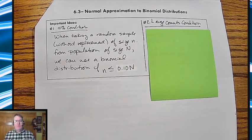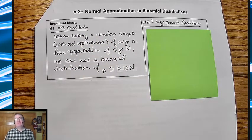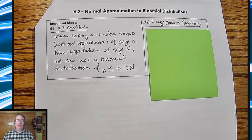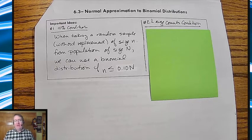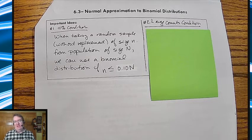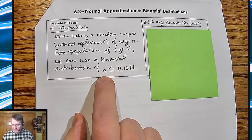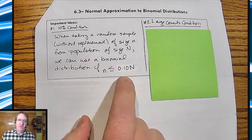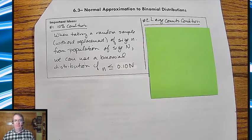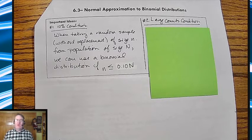10% condition. Remember what that says is that when you're taking a random sample and you're not replacing the items that you're taking out, and that's of size N, the big population is of size capital N, you can use a binomial distribution so long as N is no more than 10% of the population. In math, that would be N is less than or equal to 10% of capital N. It's extremely helpful, and that's how we get through basically all of the rest of the stats.